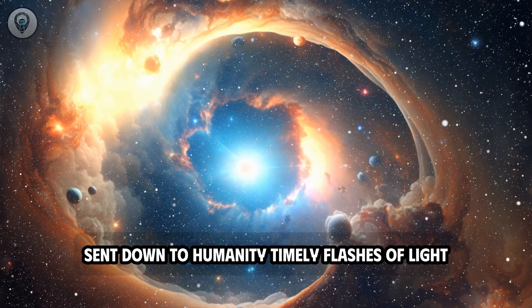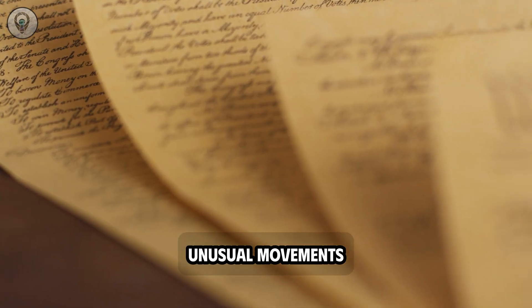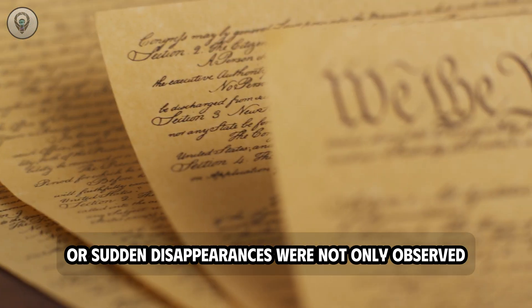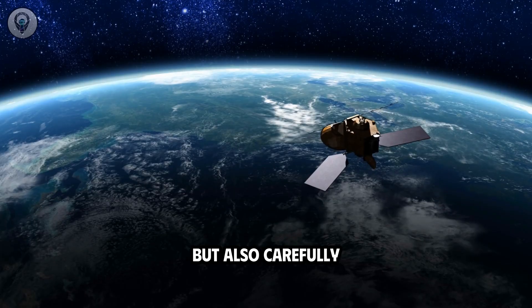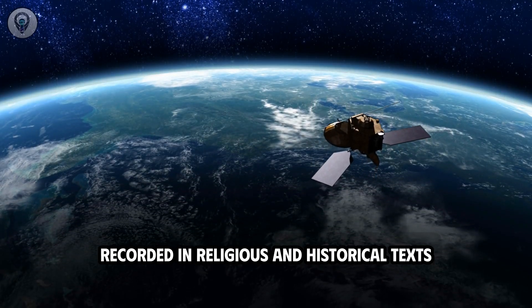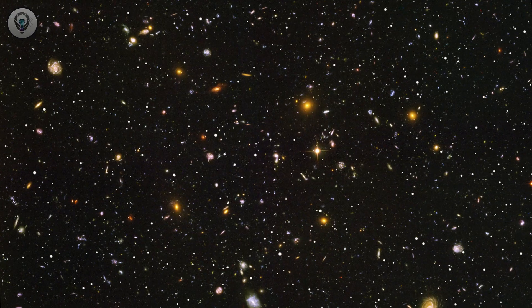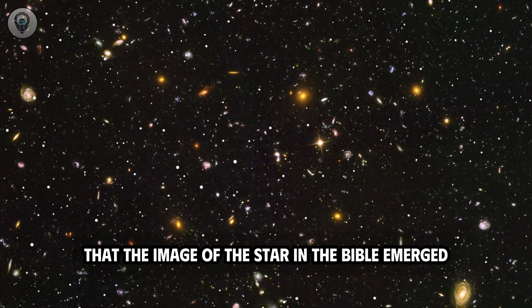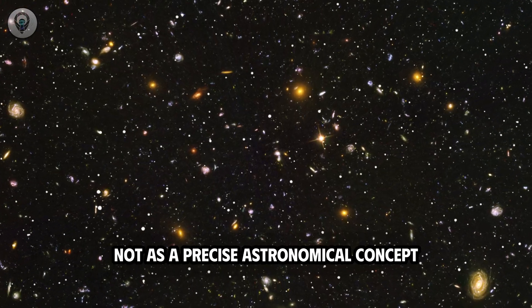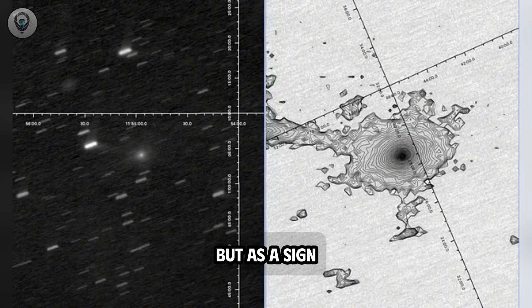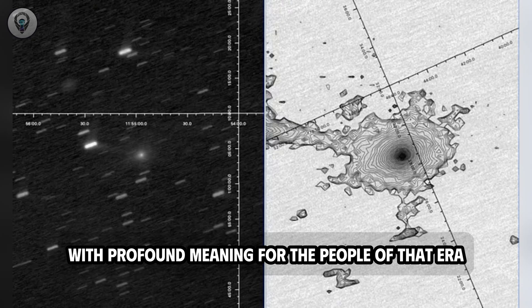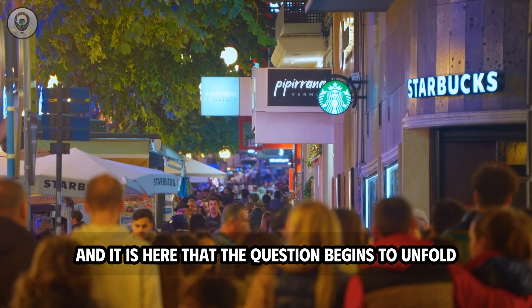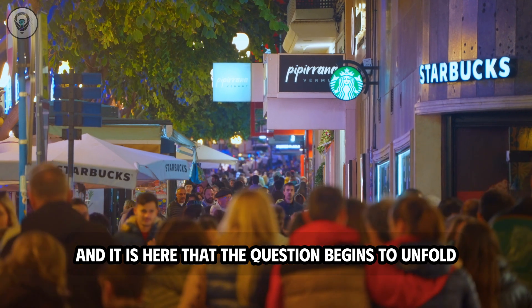Timely flashes of light, unusual movements, or sudden disappearances were not only observed, but also carefully recorded in religious and historical texts. It was from this perspective that the image of the star in the Bible emerged, not as a precise astronomical concept, but as a sign with profound meaning for the people of that era. And it is here that the question begins to unfold.